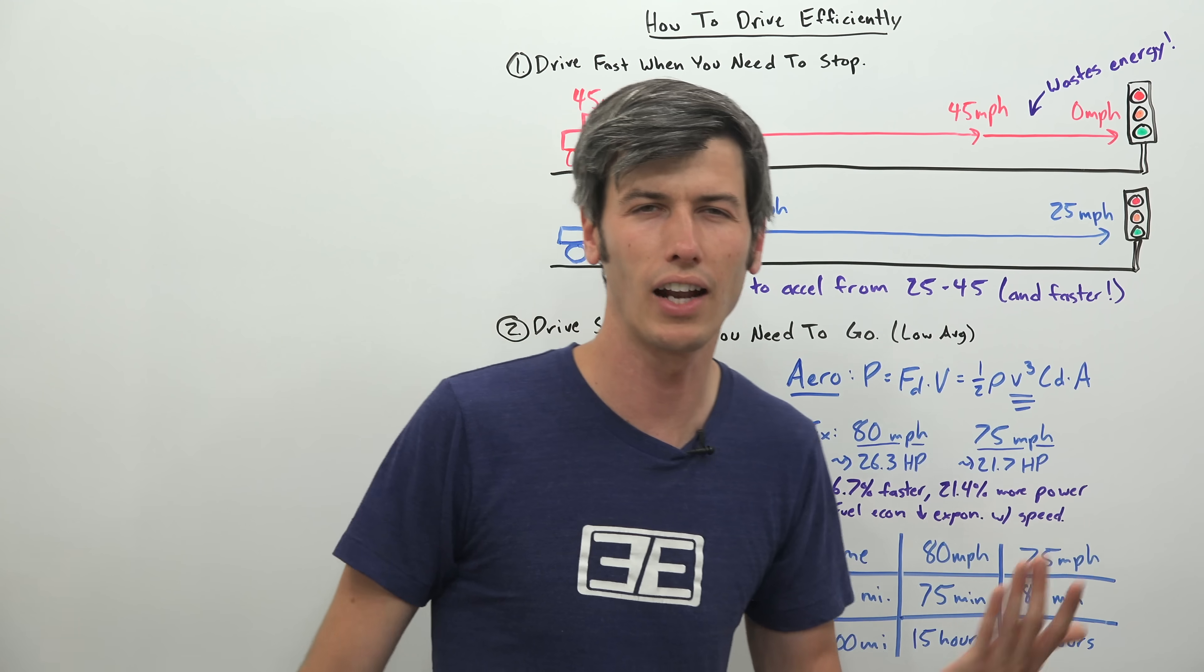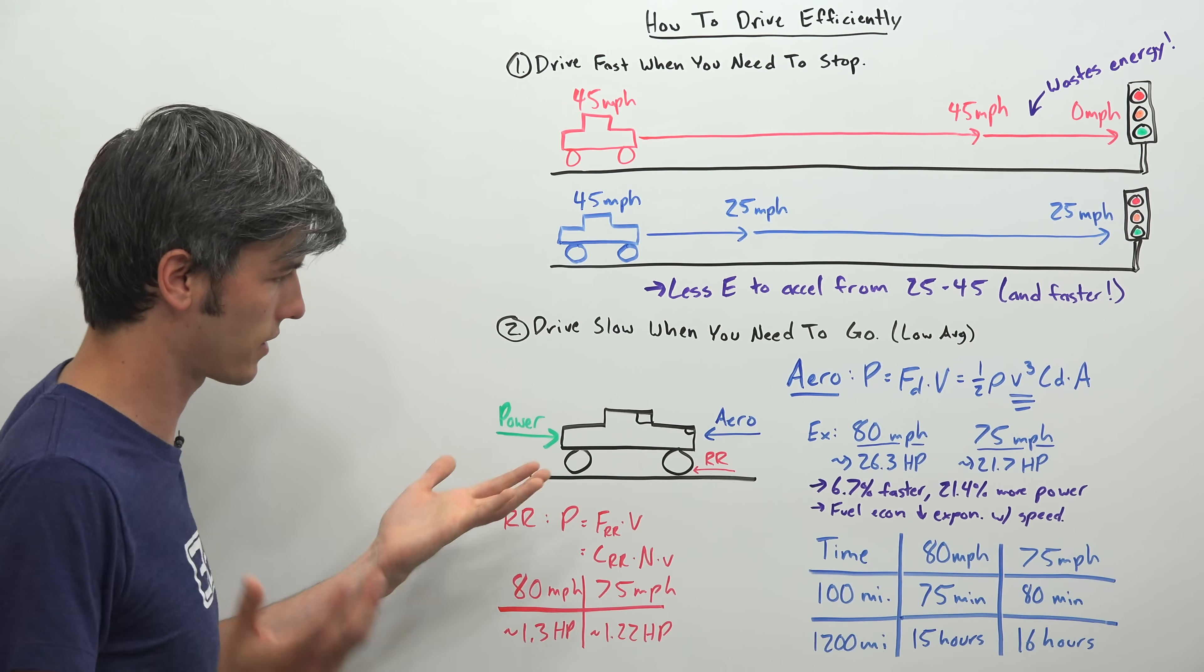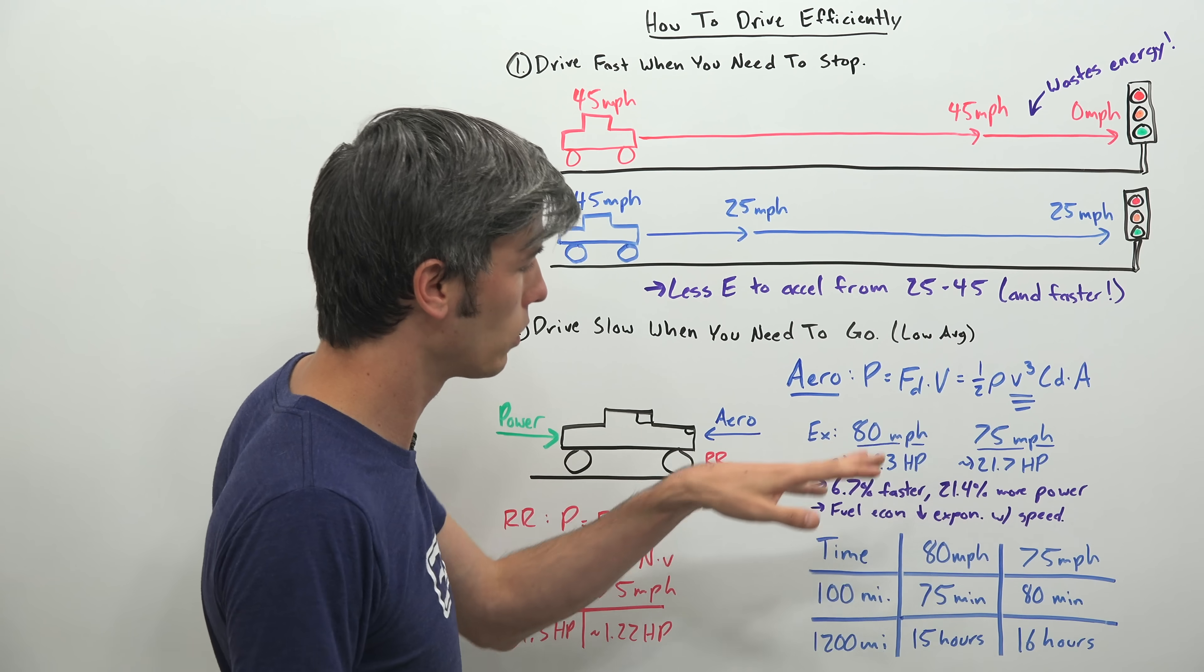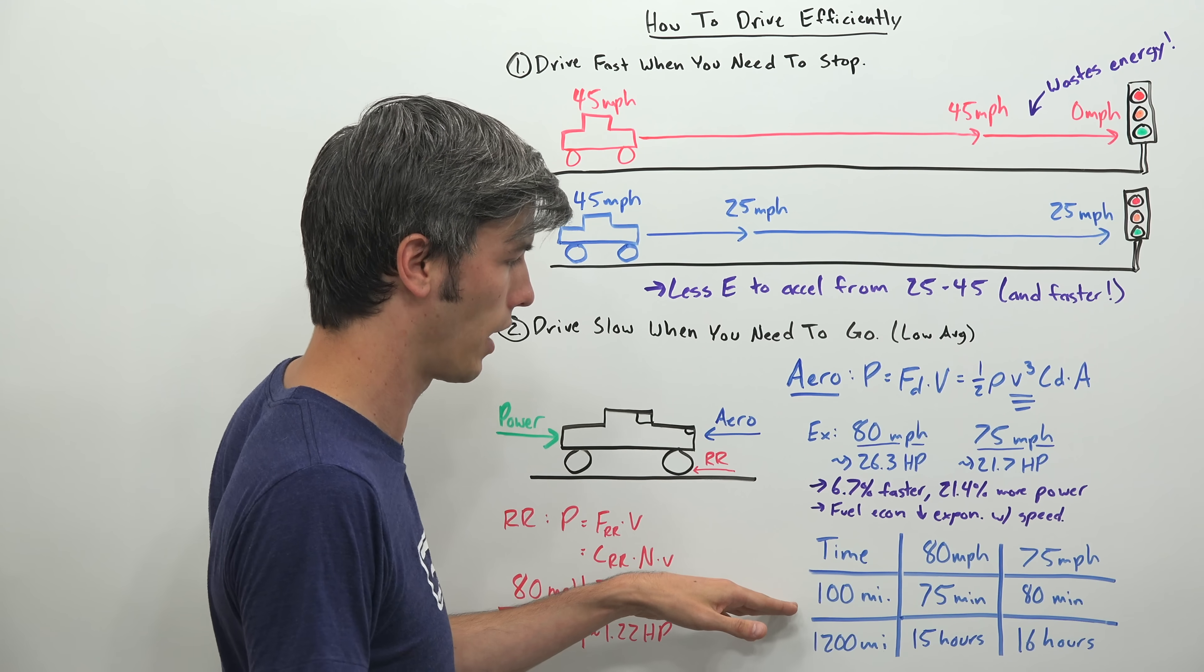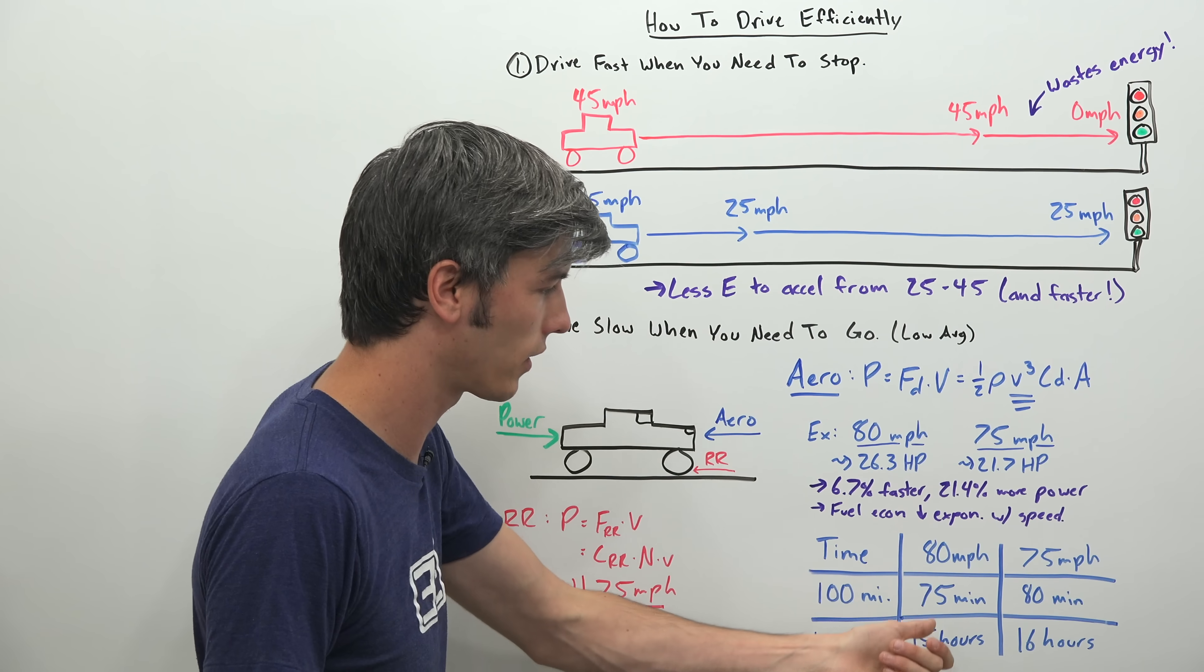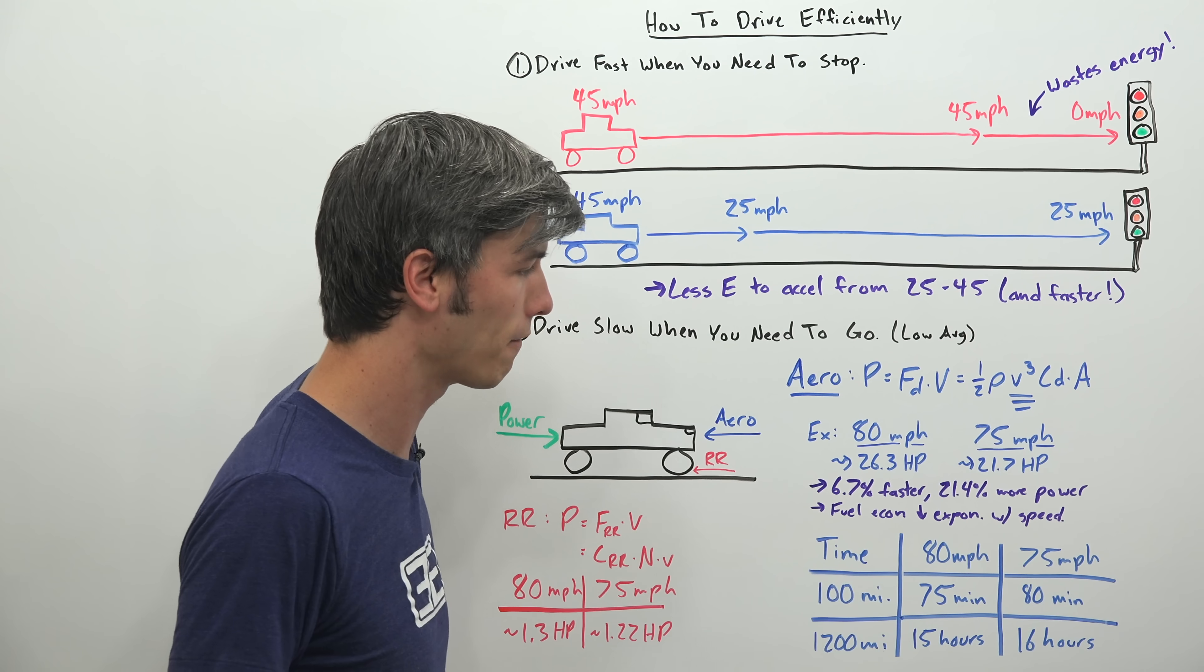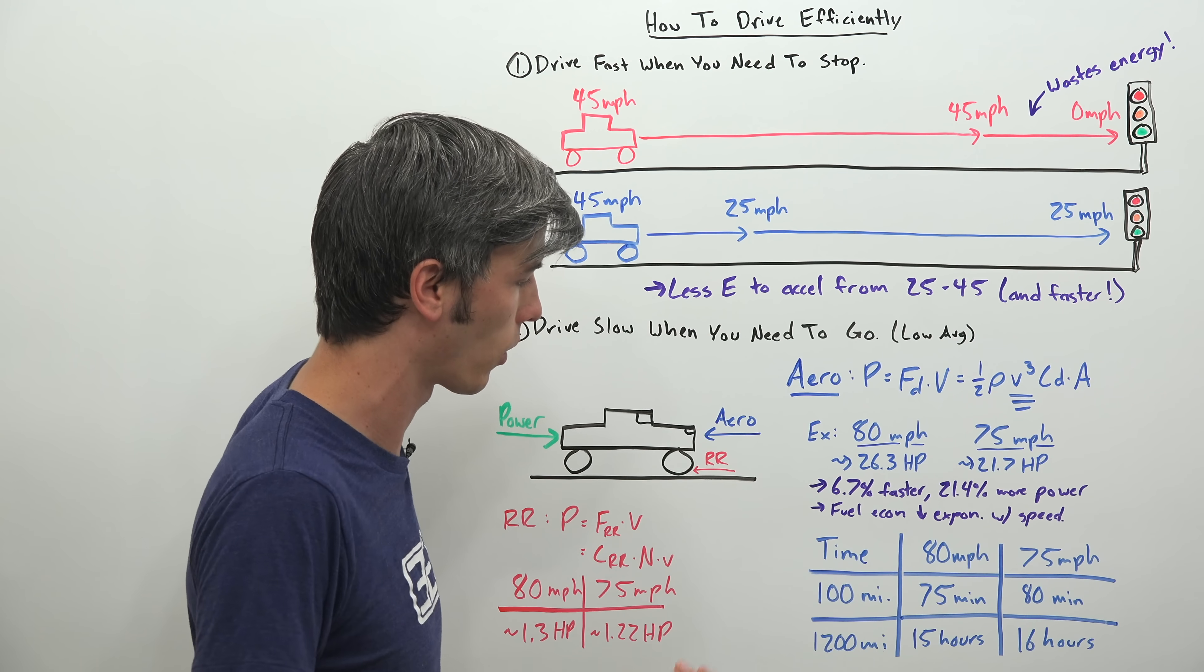And so you might be saying, but Jason, I don't want to drive super slow, then I'm not going to be able to get anywhere. And that's a fair point. But if you look at the time required to travel 100 miles, whether you're traveling at 80 miles per hour or 75 miles per hour, at 80 miles per hour it takes 75 minutes, at 75 miles per hour it takes 80 minutes. So you save 5 minutes, but you use significantly more fuel.